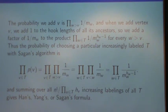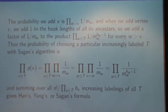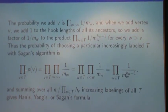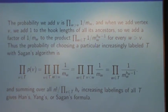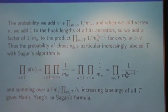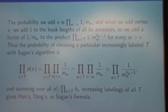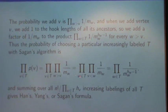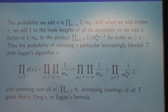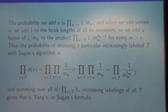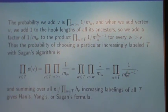So, the probability we choose a particular increasingly labeled tree is the product of the probabilities of adding each of the individual vertices, which is the product of 1 over Mw, taken over all of the vertices. Now, switch the order of products, and we have the product over all w in T, the product over all of their descendants of 1 over Mw. And the number of descendants of a vertex is exactly one less than the hook length. So we get 1 over Mw to the hw minus 1.